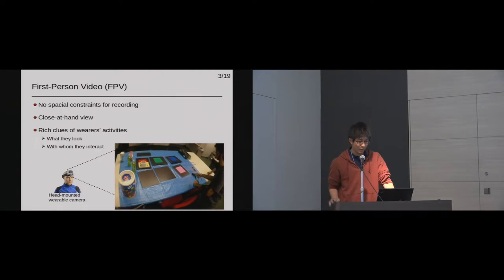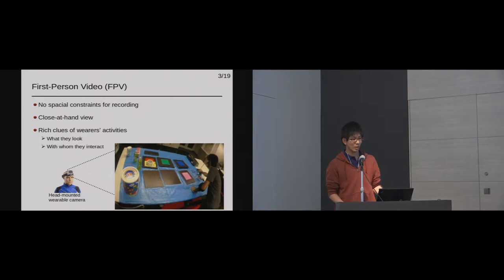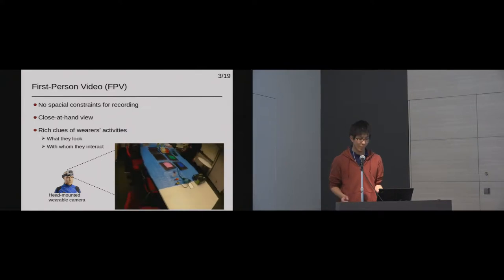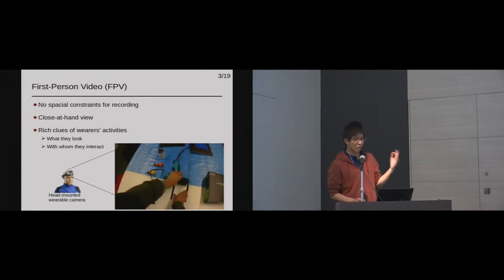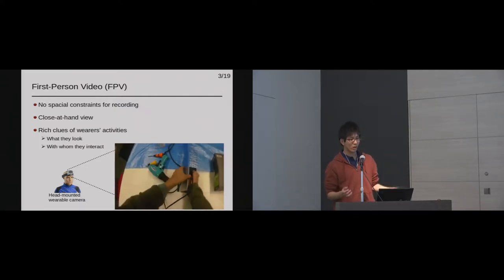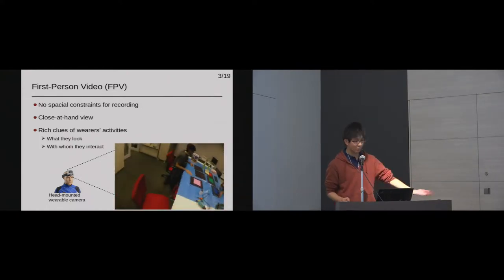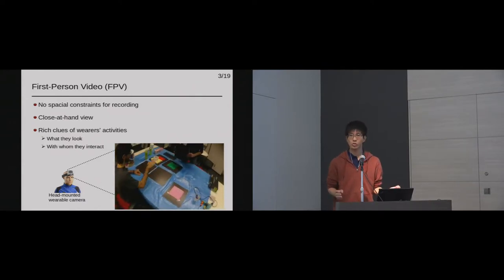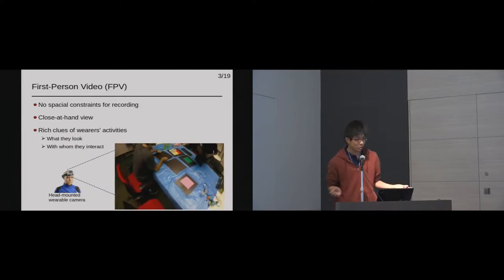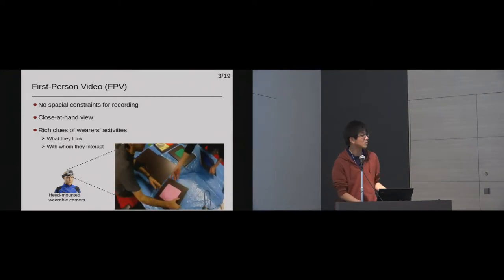First-person video is a video record taken from a wearer's first-person point of view. The first-person videos have remarkable advantages. By using wearable cameras, we can record our daily activities with no spatial constraints, because there is no need to install cameras on the environment. We can also obtain a close-at-hand view of the activity with no occlusions.